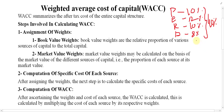40 divided by 4 equals 10%. So on an average basis, the cost of capital is equal to 10%. This is what can be called the Weighted Average Cost of Capital.